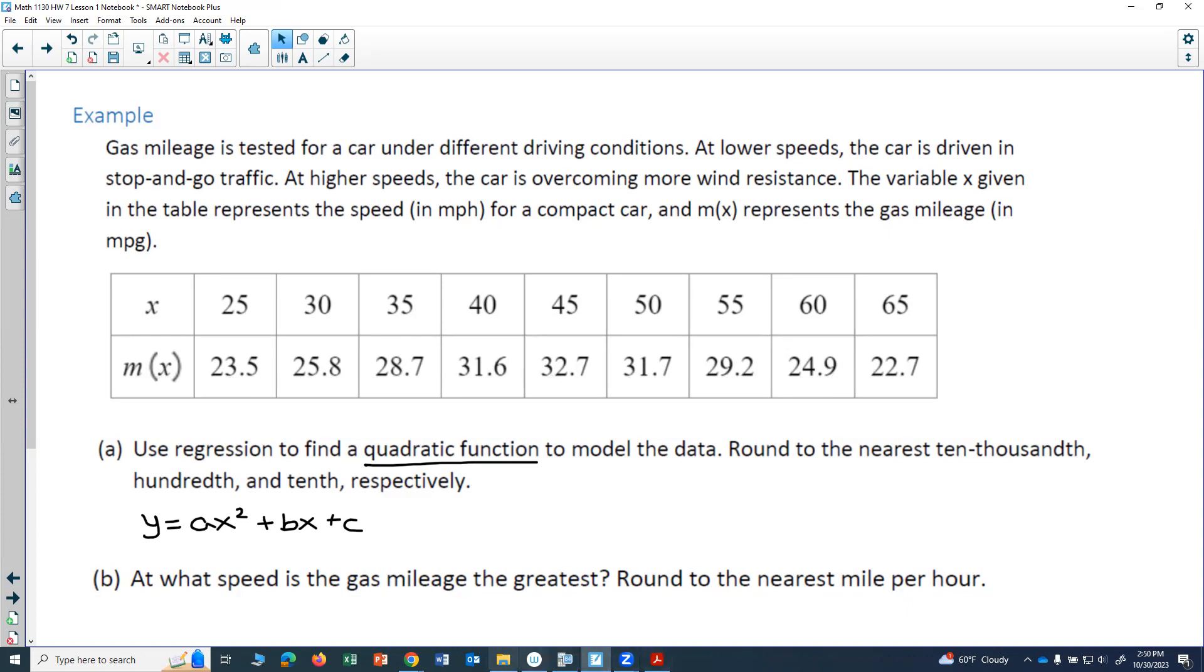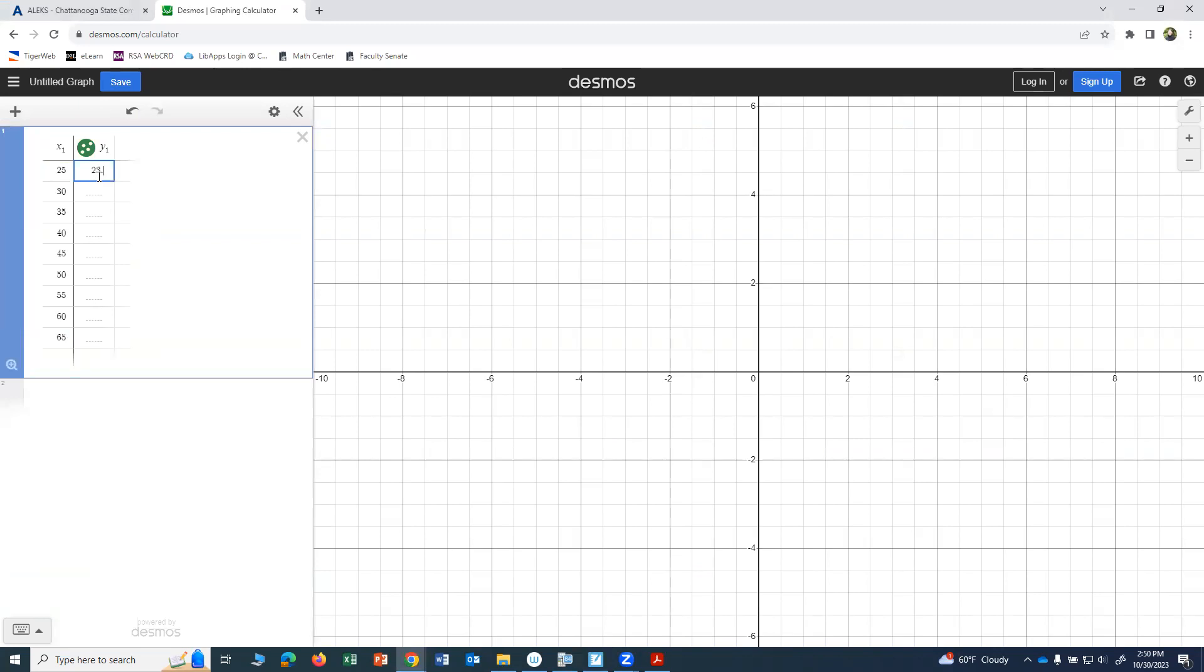I want the y values to be the m(x) values that are given in the table. So starting with 23.5, I'll have 23.5, 25.8, 28.7, 31.6, 32.7, 31.7, 29.2, 24.9, and 22.7.